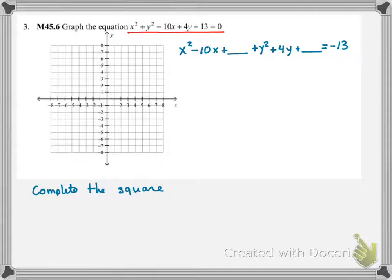I'm going to complete the square by taking half of the B term. So in this case, we have negative 5 is half of the B term. And when I square that negative 5, negative 5 times negative 5 is 25. So that's going to get added to both sides.